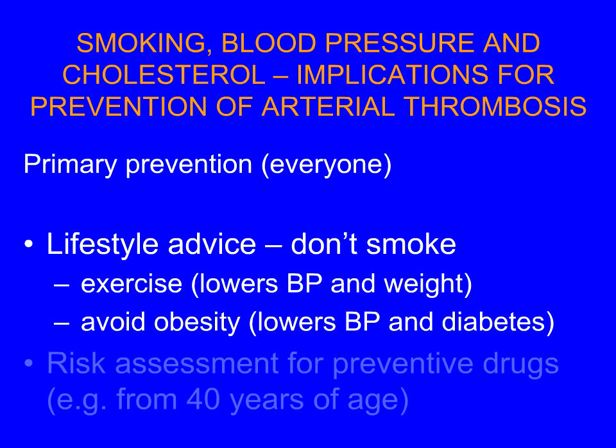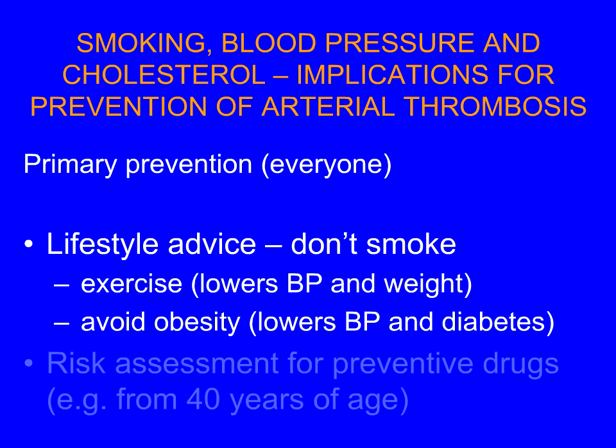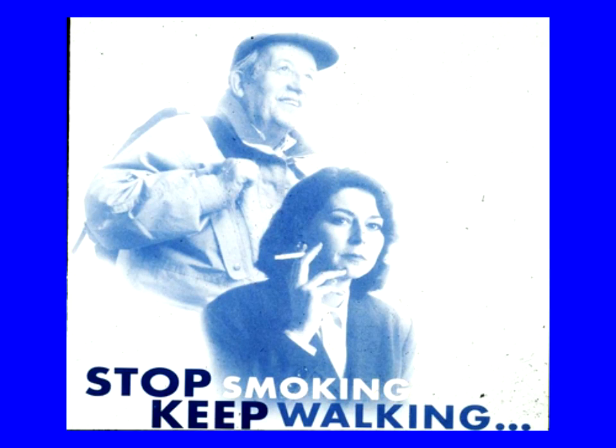So we try and reduce risk at the population level by advising everybody to live a healthy lifestyle. And at the same time, as a complementary approach, we try and identify high-risk individuals in whom we start concentrating preventive drug therapy. Many countries in Europe now have risk assessments starting in men and women from about 40 years and repeated every five years, where you measure these risk factors and try to pick out men and women at highest risk. The two best things to do if you don't want arterial thrombosis are stop smoking and keep walking — simple message.